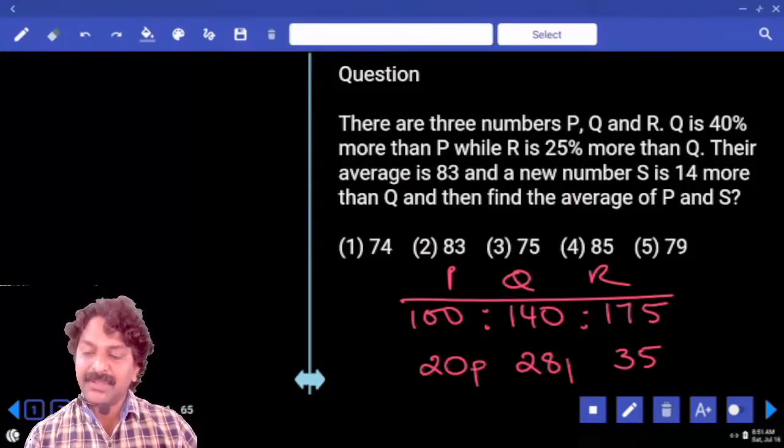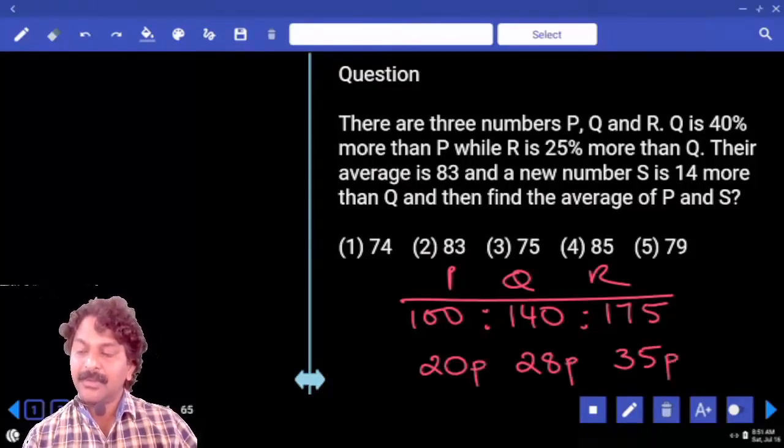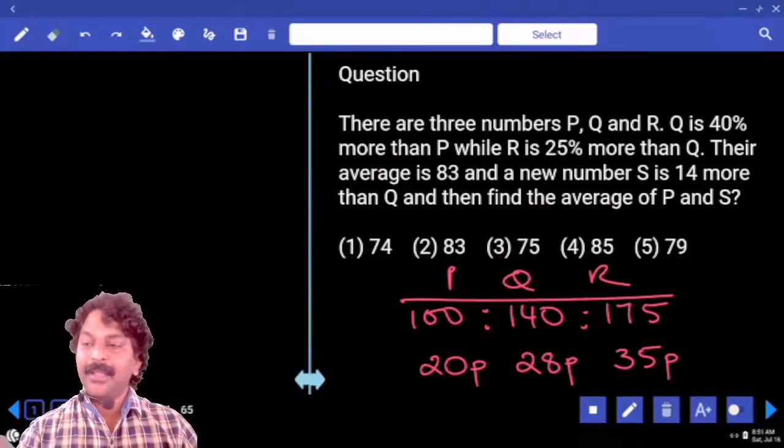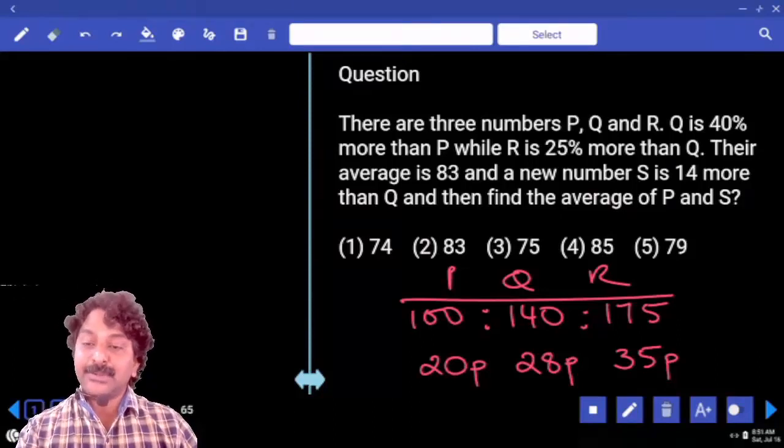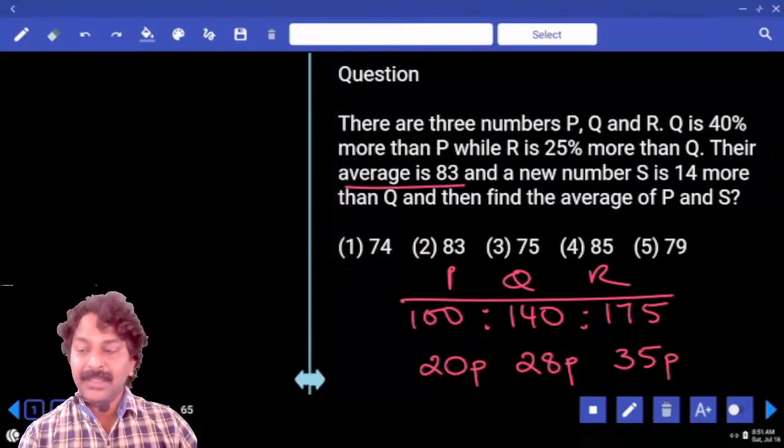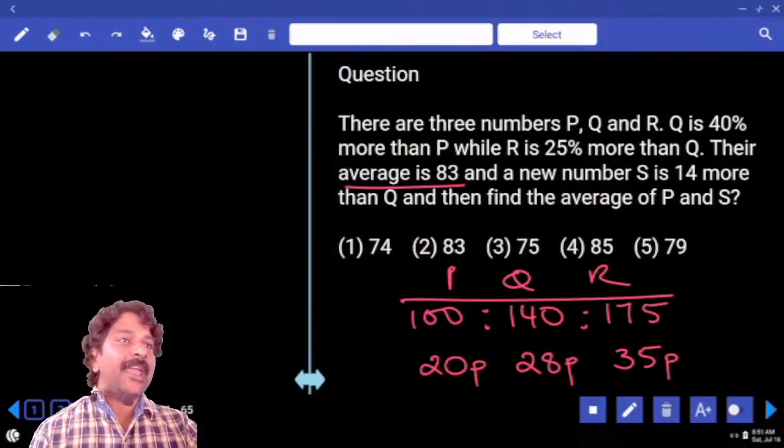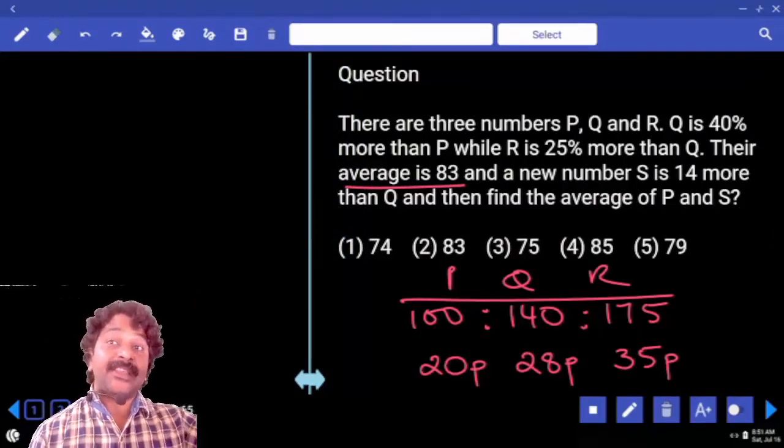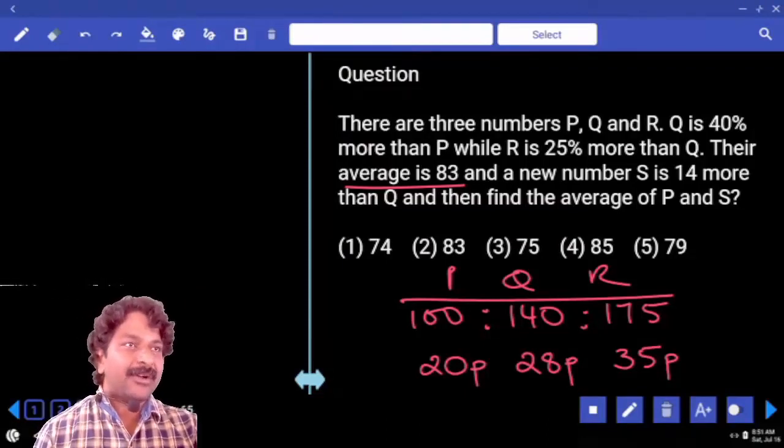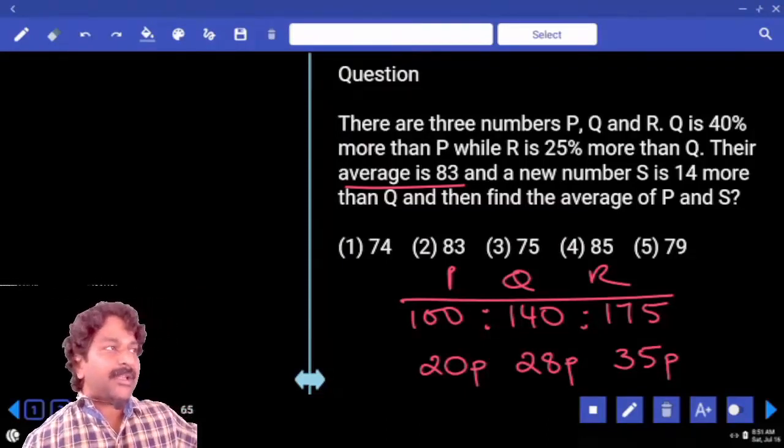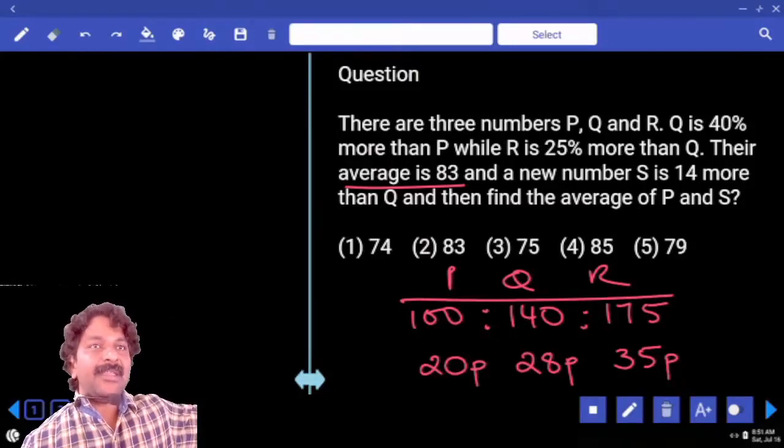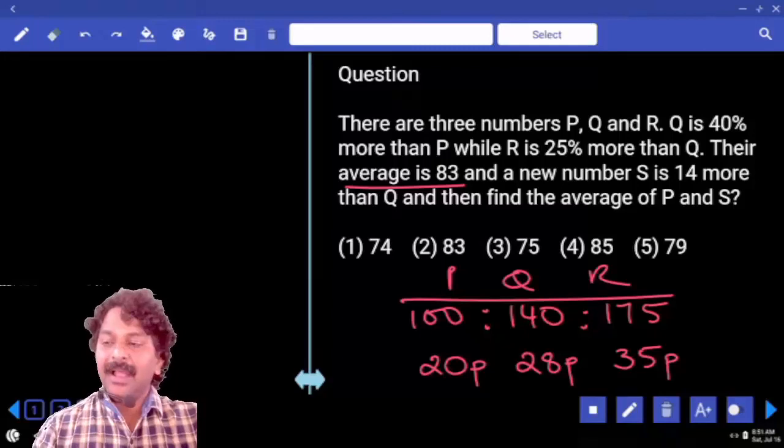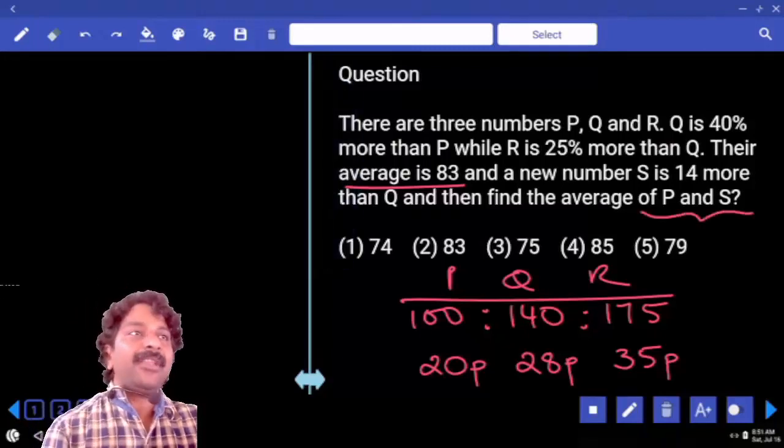Total how many parts we have? 83. Now their average is mentioned as 83. Then sum is going to be 83 into 3. If 83 parts is equal to 83 three times, each part is equal to 3. So to get numbers, every number in terms of number of parts should be multiplied by 3.